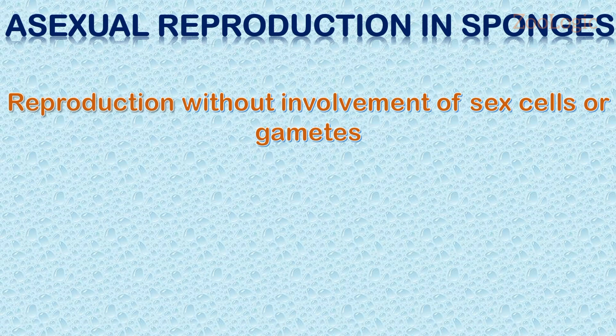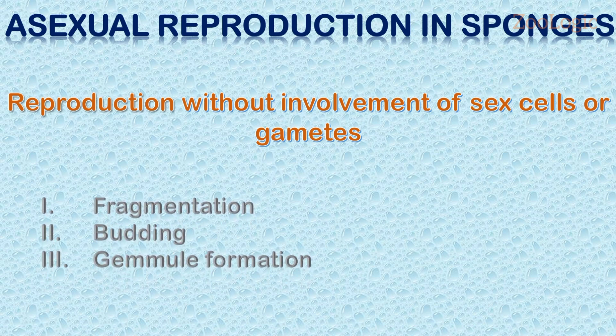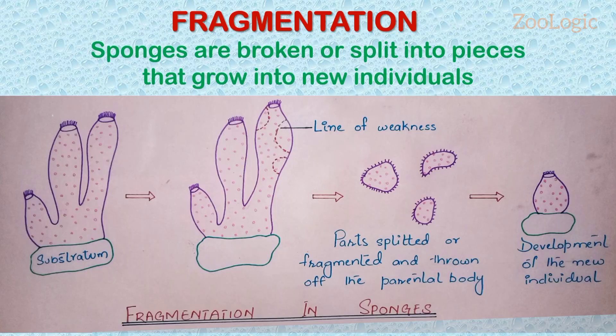There are three types of asexual methods that have been adapted by sponges. The first one is fragmentation, the second one is budding, and the third one is gemmule formation.